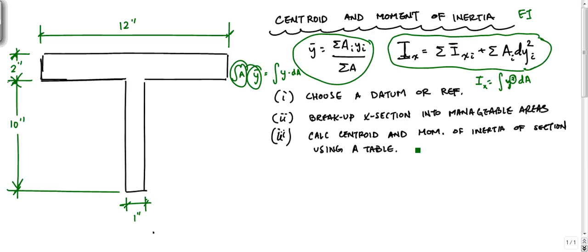Then we want to calculate the centroid and moment of inertia of a section. I'm going to do it using a table. I really like to tell people: use a table, because it's just technique. Until you get good at it, then you can get off the table. But for now, just do the table so you know what you're doing until you feel really good about it.